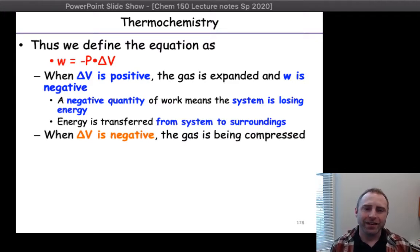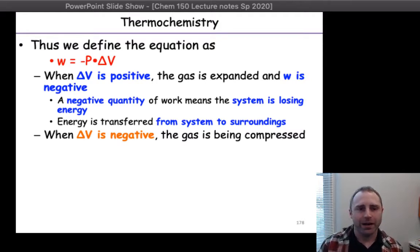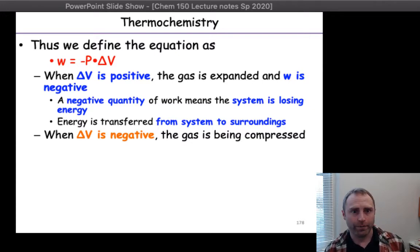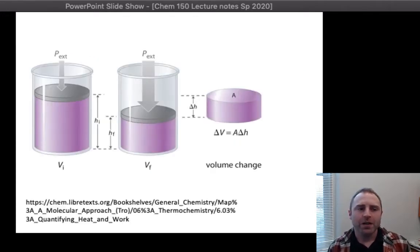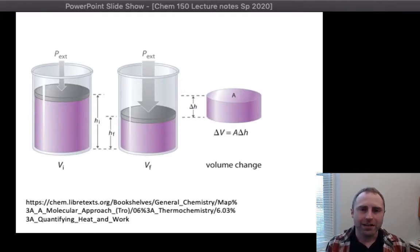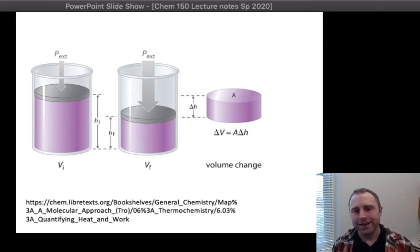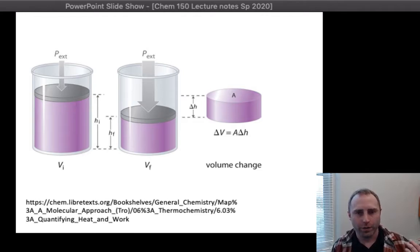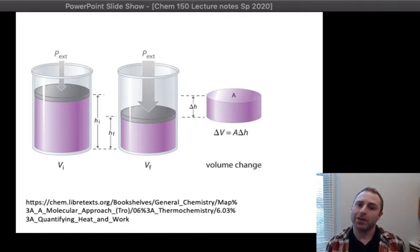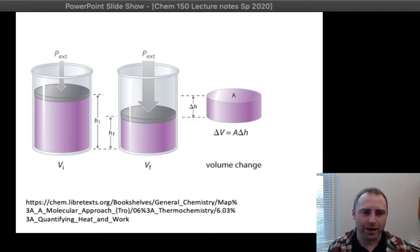If delta V is negative, we have a situation where the final volume is smaller than our initial volume. Going back to that image from yesterday, the final volume — the one in the middle — is less than the initial volume. So we are compressing the gas. This is going to be a chapter where you're going to have to break out your thesaurus, because expansion, compression, work done on, work done by — things like that terminology will come up. Your thesaurus is your best friend for parsing out the language.